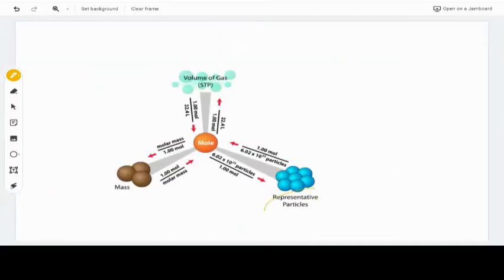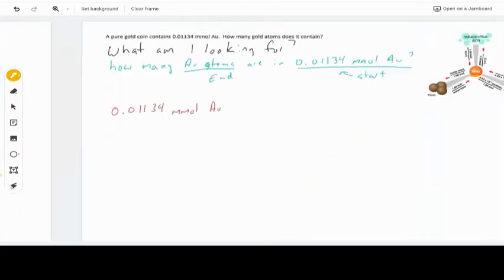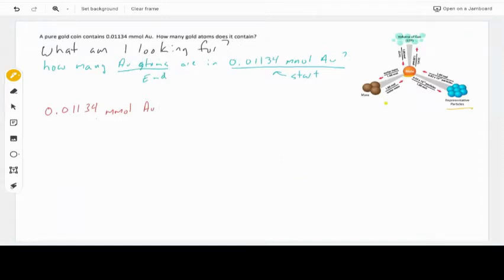Let's go back to this for just a second. Representative particles could be atoms, could be molecules, could be formula units, depending on whether we are looking at an element, a covalent compound, or an ionic compound. We're going from moles to representative particles. This shows us we're going to have one step. But the problem is we're not in moles right now. We are in millimoles. So the first thing we need to do is convert from millimoles to moles.